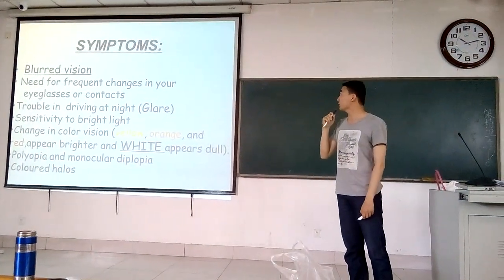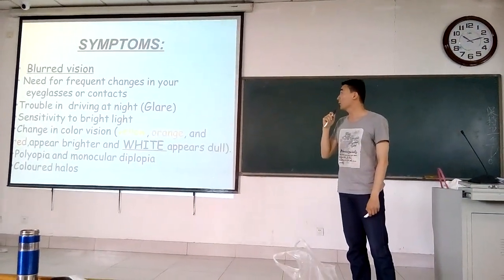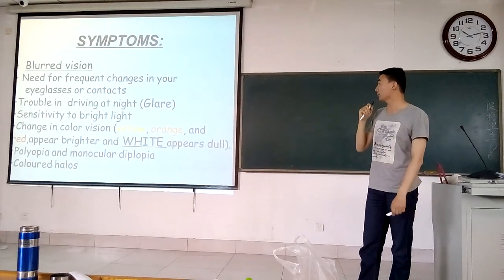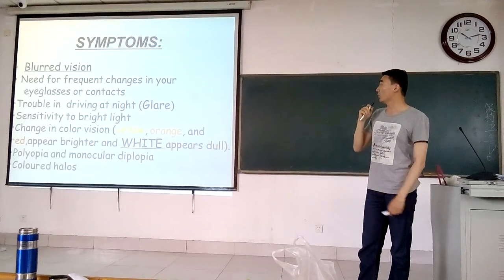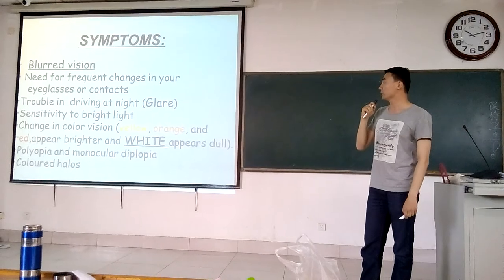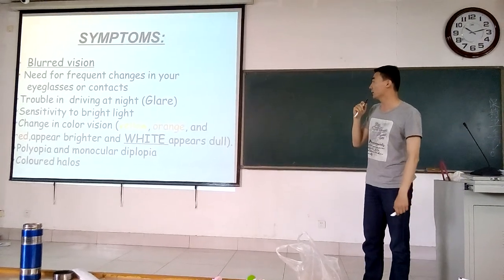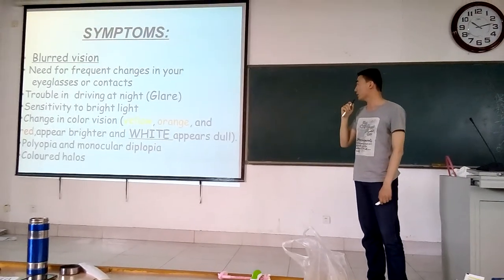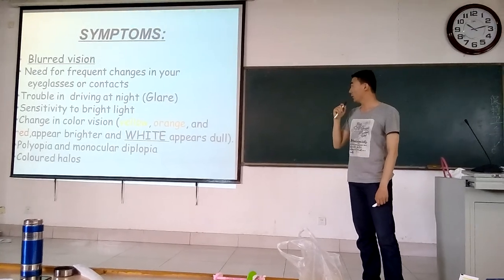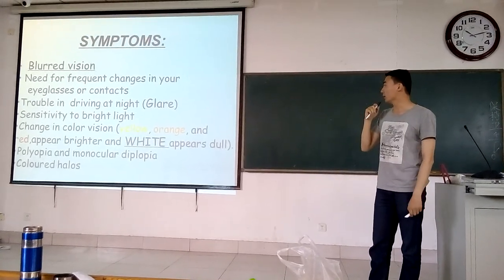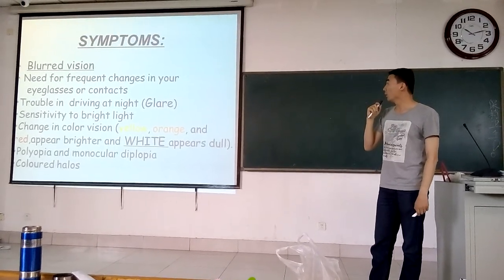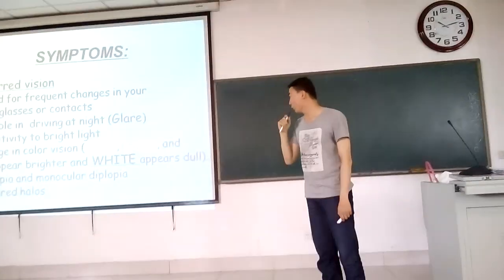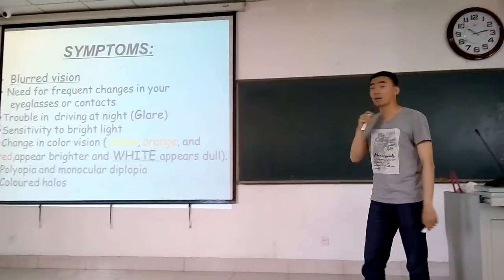The third part is signs. Blurred vision. Need for frequent change in your glasses or contacts. Trouble in driving and light. Sensitivity to light. Change in color vision — yellow, orange, and red appear brighter, and white appears dull. Also opium and monocular diplopia.